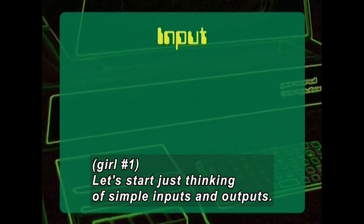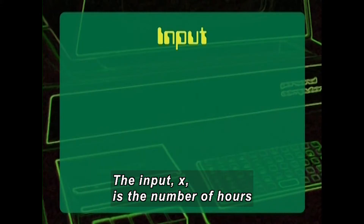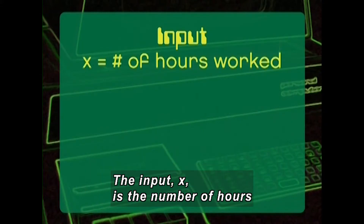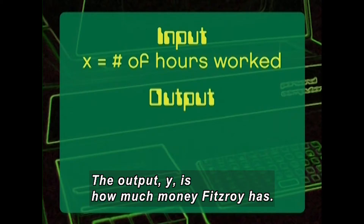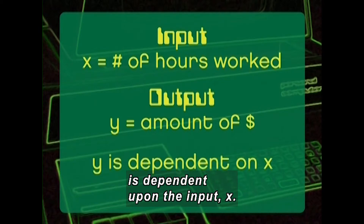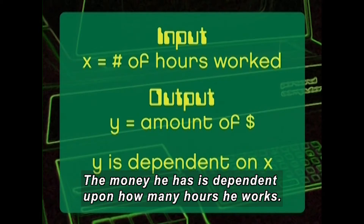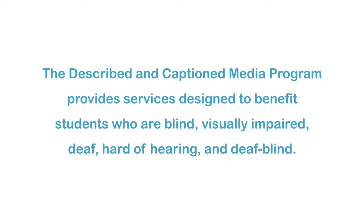Let's start by thinking of simple inputs and outputs. The input, X, is the number of hours that Fitzroy works at the car wash. The output, Y, is how much money Fitzroy has. Note that the output, Y, is dependent upon the input, X. The money he has is dependent upon how many hours he works.